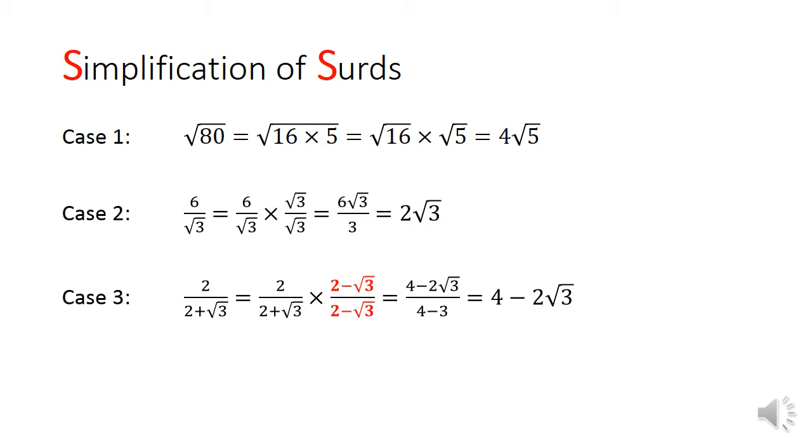In case 3, the denominator consists of 2 plus root of 3. How we can rationalize the denominator is to multiply 2 minus root 3 to both the numerator and the denominator. This will give us 2 squared minus root 3 squared in the denominator, which turns out to be 1.